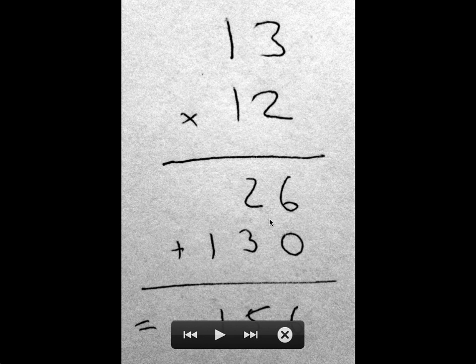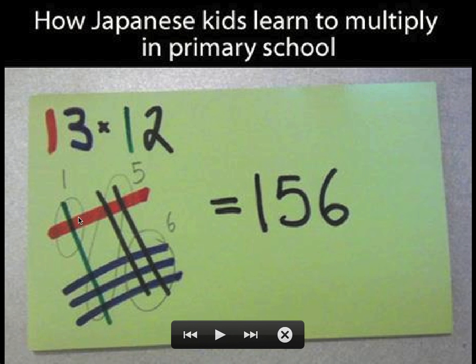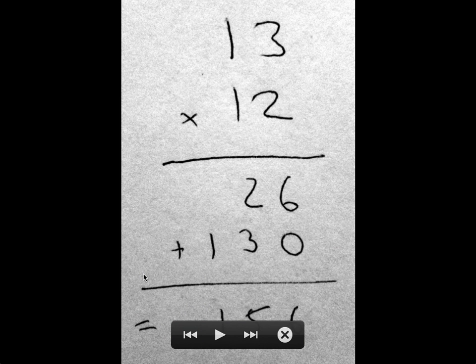Notice that there's a one, a two, a three, and a six here in these intermediate additions. That's the same one, two, three, and six coming down here.